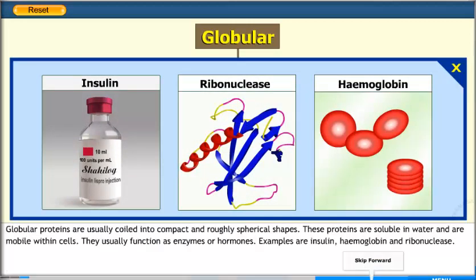Globular proteins are usually coiled into compact and roughly spherical shapes. These proteins are soluble in water and are mobile within cells. They usually function as enzymes or hormones. Examples are insulin, hemoglobin, and ribonuclease.